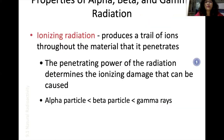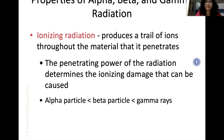Let's see the properties of alpha, beta, and gamma radiation. Ionizing radiation produces a trail of ions throughout the material it penetrates, and the penetrating power of radiation determines the ionizing damage it can cause. Gamma rays are highly ionizing with the highest penetrating power, followed by beta particles, with alpha particles having the least penetrating power.